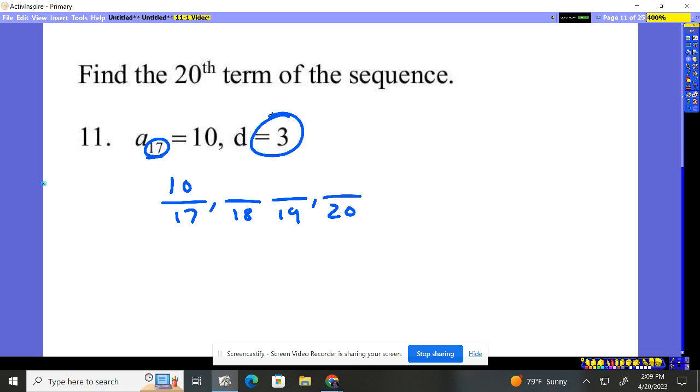It says we're going up by 3. So up by 3 is 13, up by 3 again, up by 3. So 19 is our answer for number 11. That would be the 20th term of the sequence.